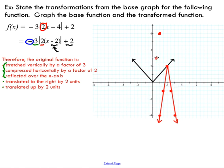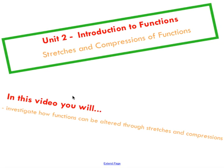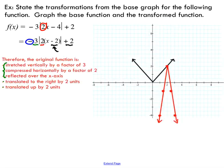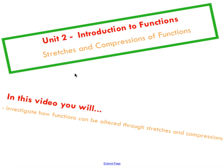This is the final transformed function. If you're doing this on paper, it's always a good idea to label your function so whoever is looking at your work knows this is your final answer. That should be our completed transformed graph from our base graph. In the next video, I'll post a combination of all the transformations, probably with one example for each base function we've looked at, and that should give you a pretty good idea of where you should be with transformations.